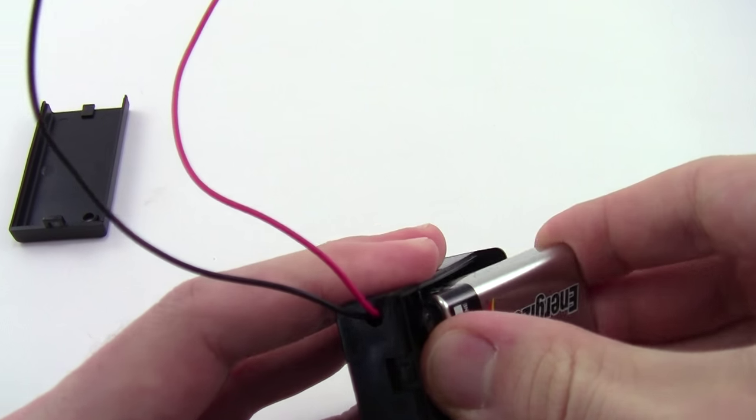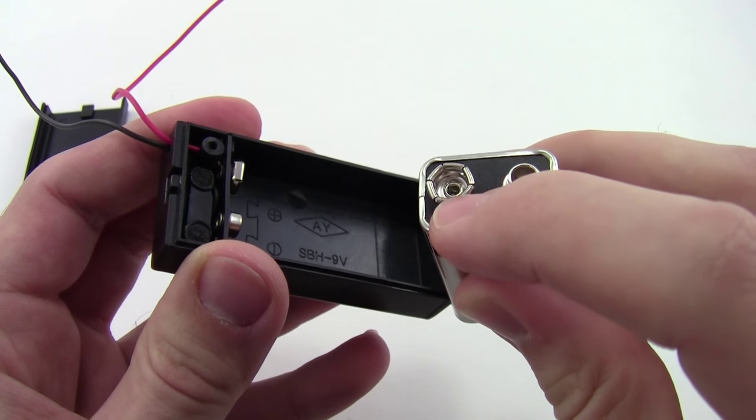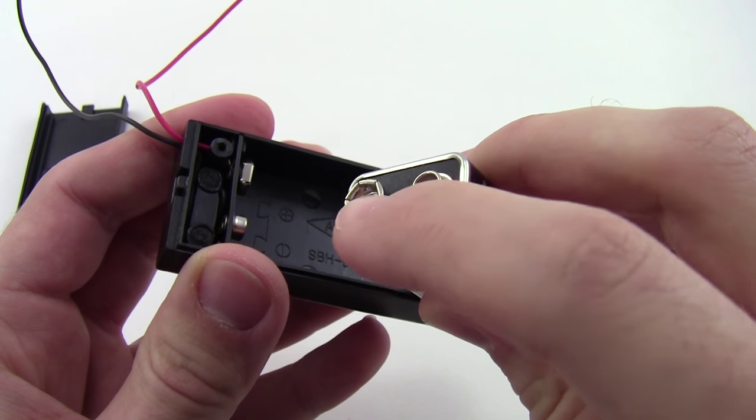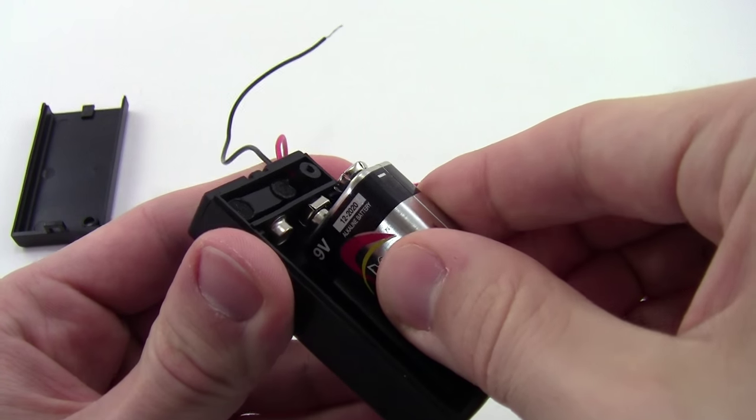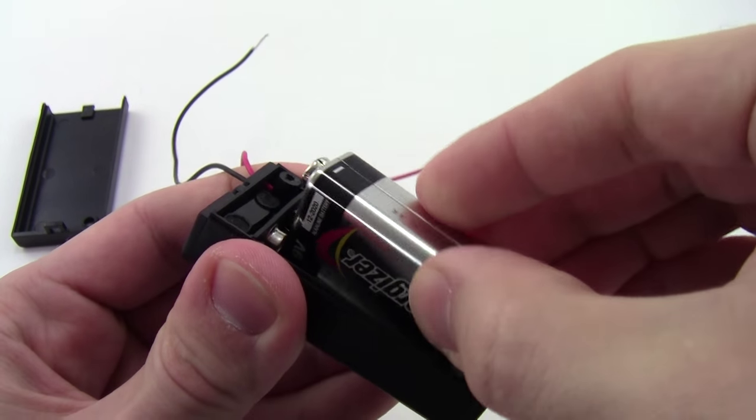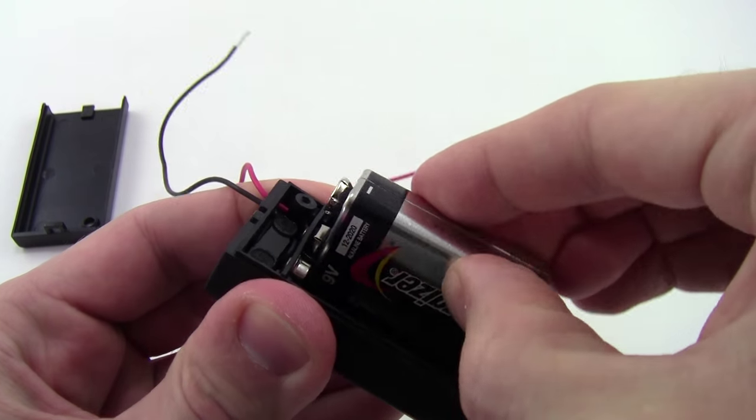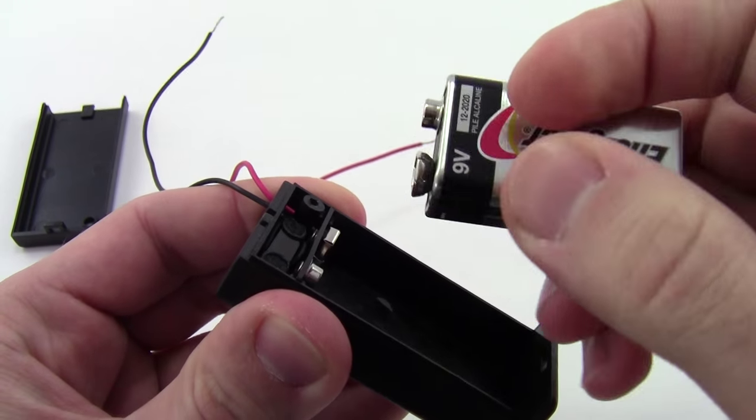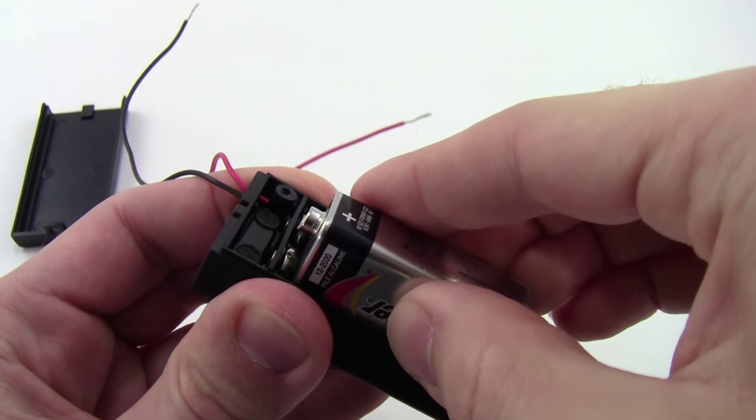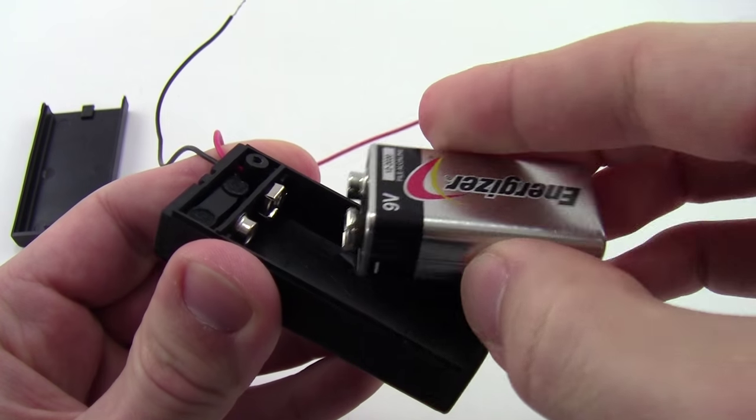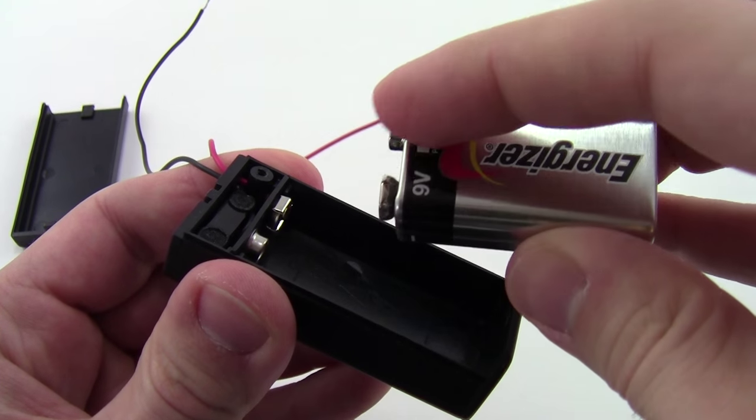If you're having trouble getting that to work, it could be because these female snaps are a little tight. What you can do is, one at a time, use the male snaps and wiggle around to loosen them up a bit. That should make the tolerance looser and easier for you to get the snaps lined up.